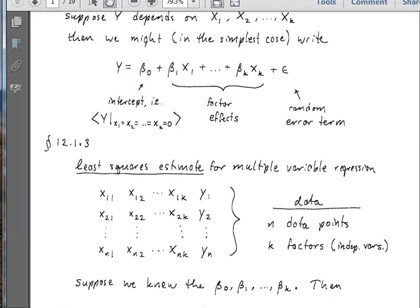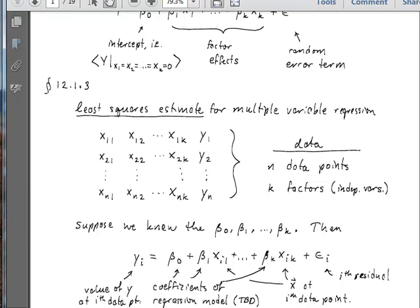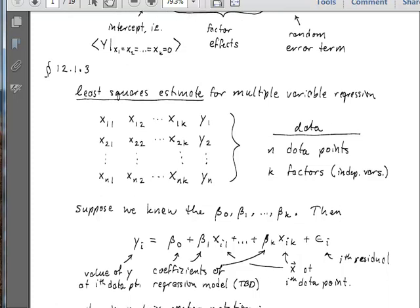So if we go down and think now about what our data set is going to look like, suppose we collect n data points. And n better be larger than k if we're going to be doing regression. We need to have more data points than the number of coefficients that we're fitting. So n should be larger than k and, in fact, larger than k plus 1 since we have an intercept variable beta 0 as well. So we've got n data points.